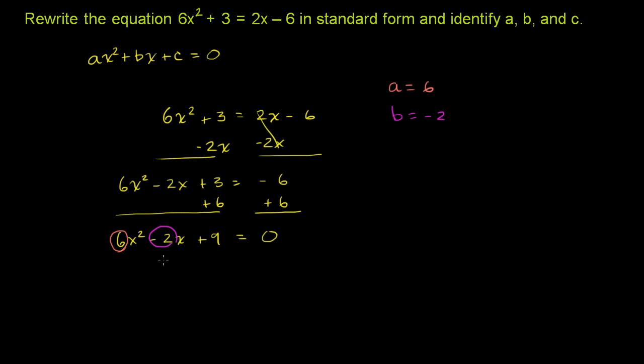Because notice, the standard form says plus bx, but over here we have minus 2x. So b is negative 2. And then c is 9.